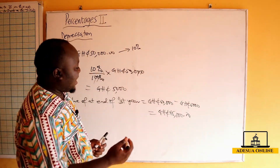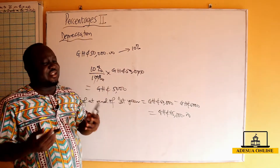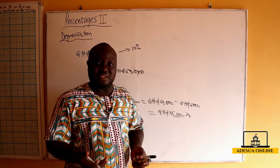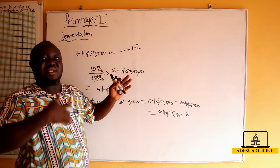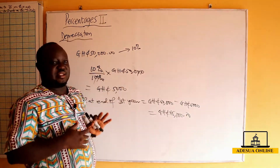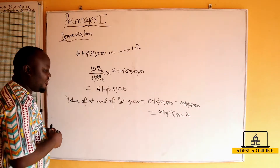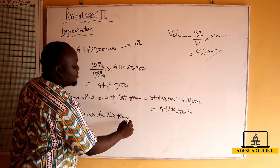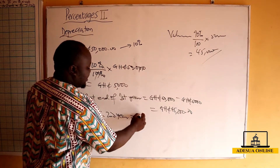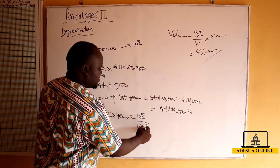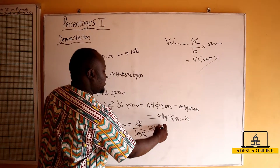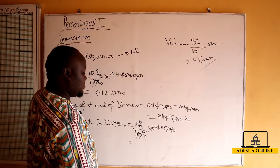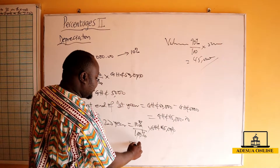Sometimes the percentage changes — they'll tell you the value of the car depreciated by 10 percent one year, 5 percent the following year, 2 percent the year after, and so on. In that case you change the percentage for each given year. But in this case we are using a flat rate of 10 percent. So for the second year, depreciation is 10 percent over 100 percent times 45,000 Ghana cedis, which gives us 4,500.